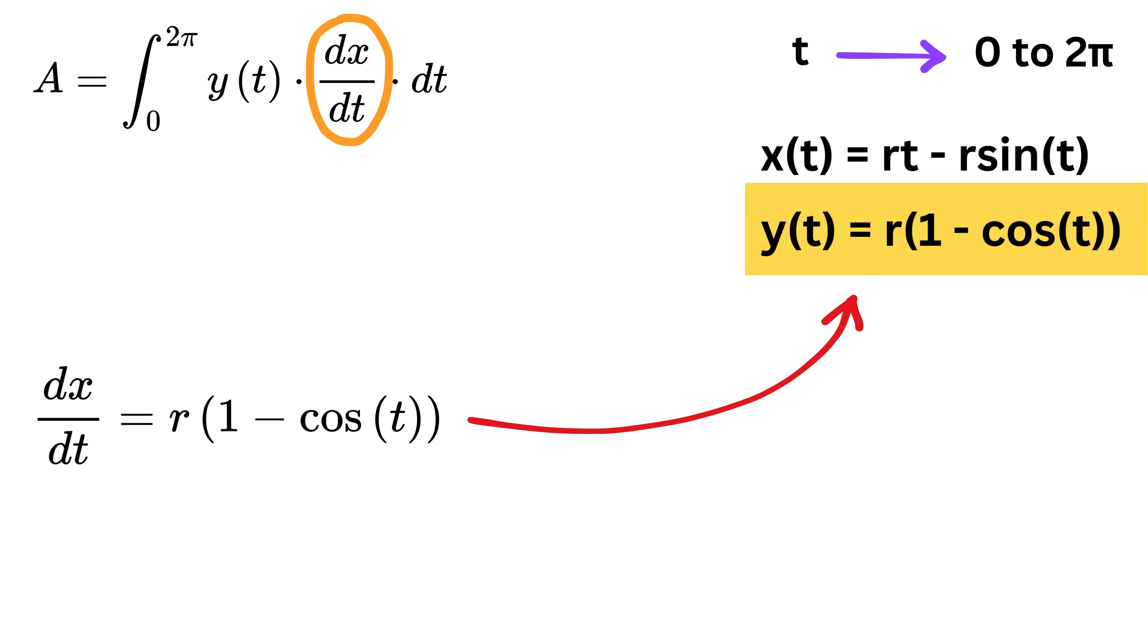Notice this derivative equals the expression we already have for y. Therefore, when we multiply y by the derivative of x with respect to T, we get a simple square.